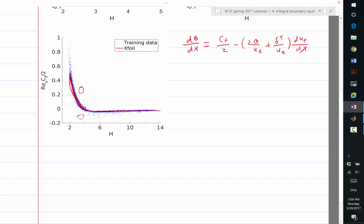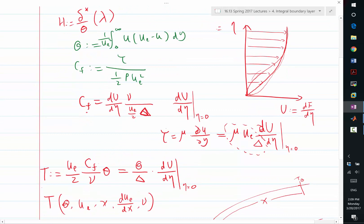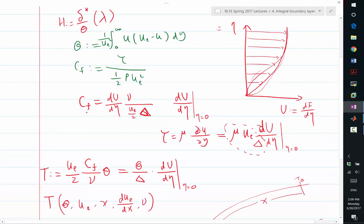D theta dx is equal to Cf over 2 minus 2 times theta over ue plus delta star over ue, duedx. Okay, so first of all, Cf is equal to T times nu, 2 nu divided by ue theta, right?